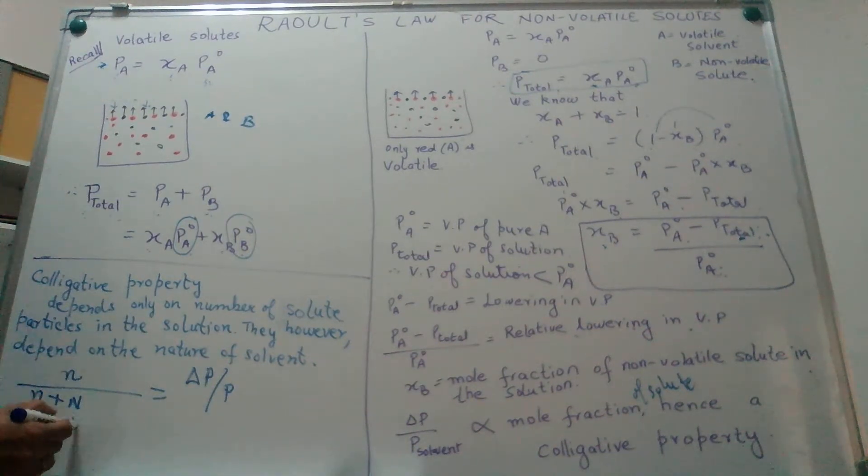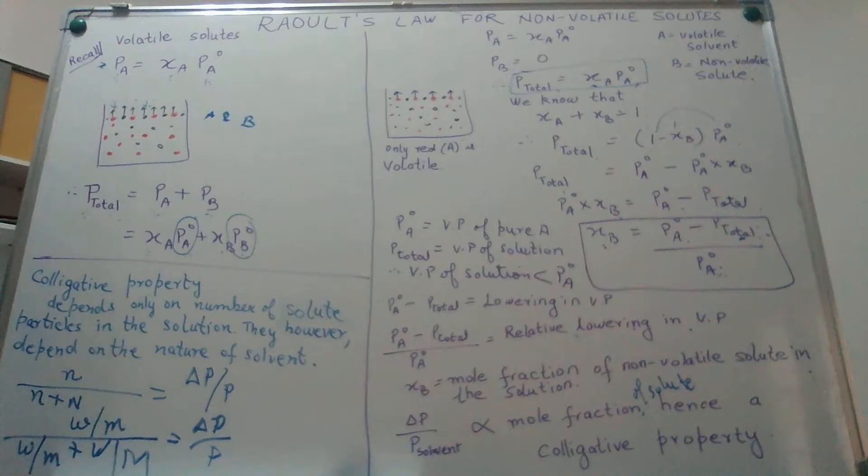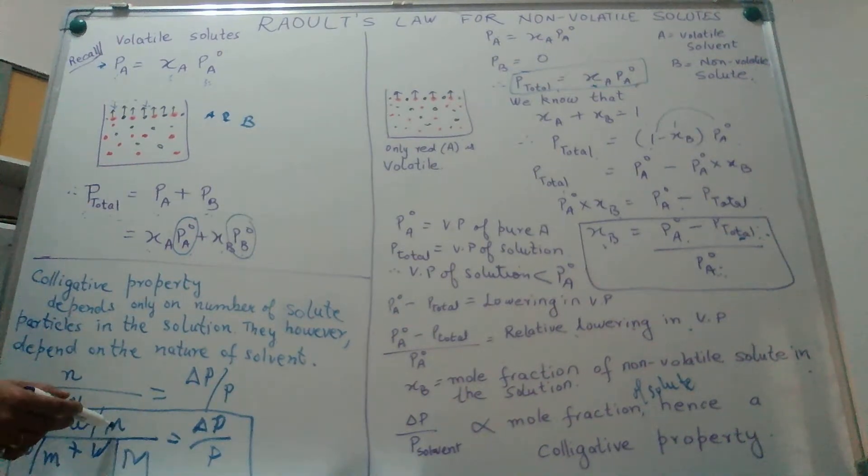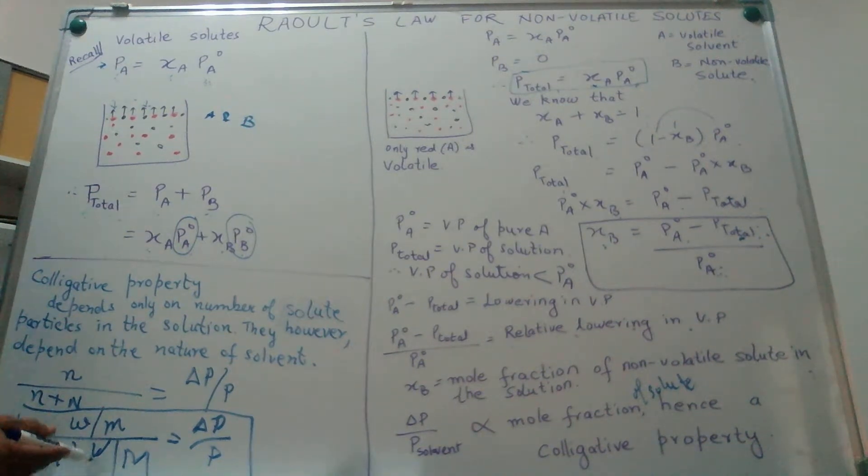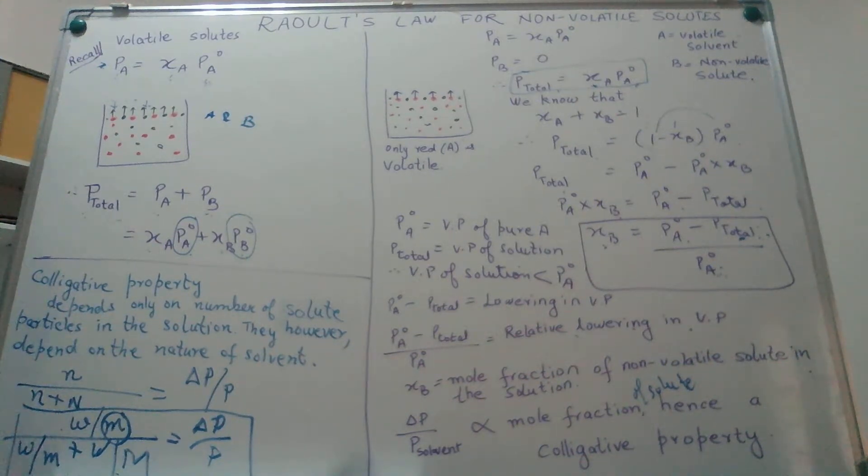Number of moles again is related to the weight divided by the molar mass. Weight divided by molar mass plus weight divided by the molar mass, where we have used small letters for the solute and capital for the solvent. If you notice over here, we are using the concept of molar mass when we are expressing the number of moles. So if we know the weight of the solvent, the molar mass of the solvent, the weight of the non-volatile solute that we are adding to the solvent, we can easily decipher the molar mass of the solute in the solution.